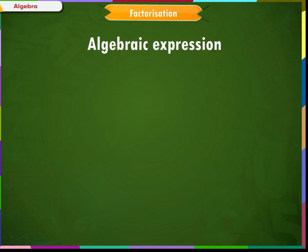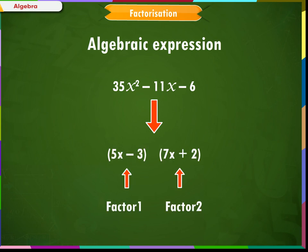When a given algebraic expression is the product of two or more algebraic expressions, each of the expression is called the factor of the given expression. The process of finding these factors is called factorization. We will learn about the different methods of factorizing an algebraic expression.